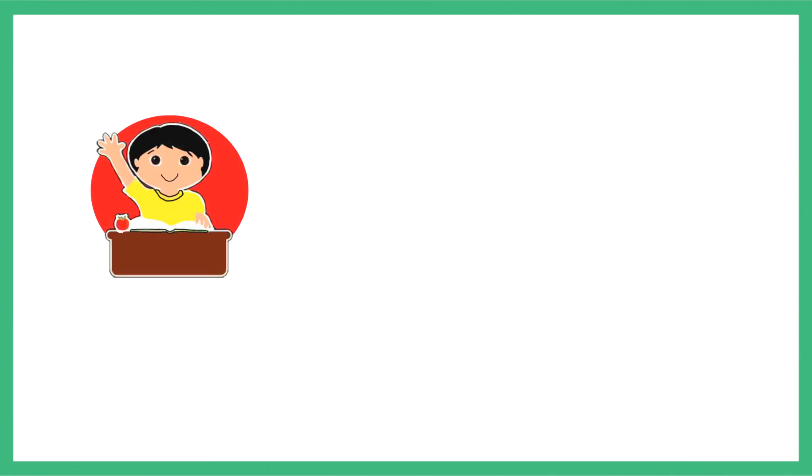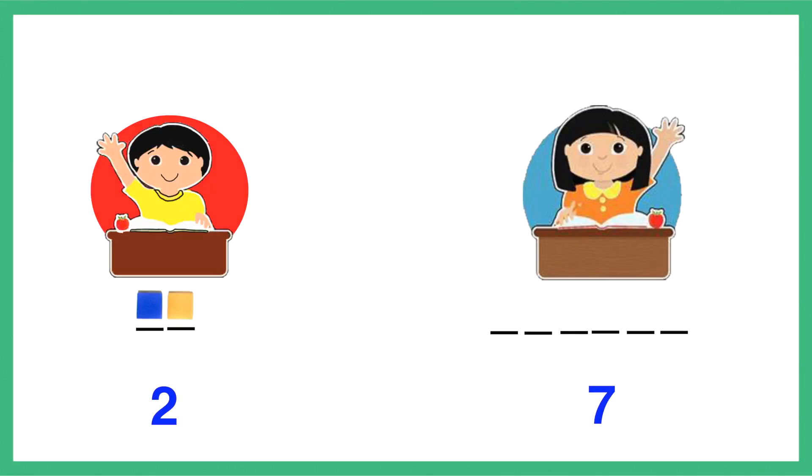If Raju has 2 counters and Amina asks him for 7, what does Raju do? After giving away 2 counters, Raju has none left to give. This establishes that a bigger number cannot be taken away from a smaller number.